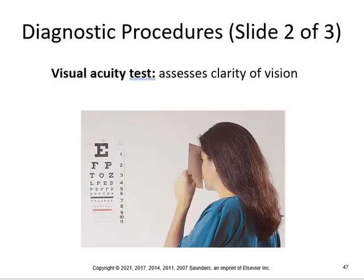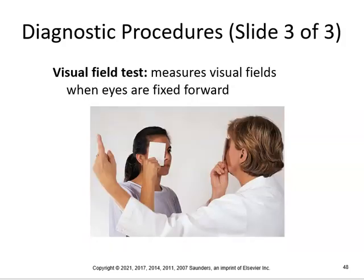Some of the diagnostic procedures — you've probably done this — the Snellen chart, when you go to the doctor's office. Visual acuity tests: if you have 20-20 vision, you can see a certain line from 20 feet. The visual field test measures visual fields when eyes are fixed forward — it checks your peripheral vision.